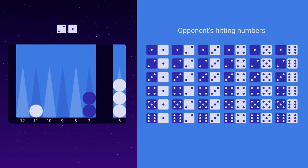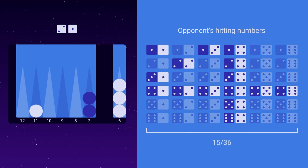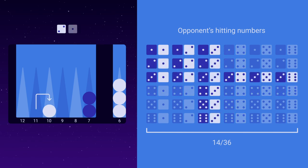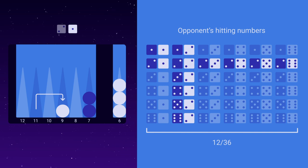How does it look if you don't move the checker at all? That's 15 out of 36 hitting numbers. What if you move it 1 pip? This move has 1 out of 36 fewer hitting numbers. What if you move the checker 2 pips, 11 to 9? This only leaves 12 hitting numbers to your opponent.